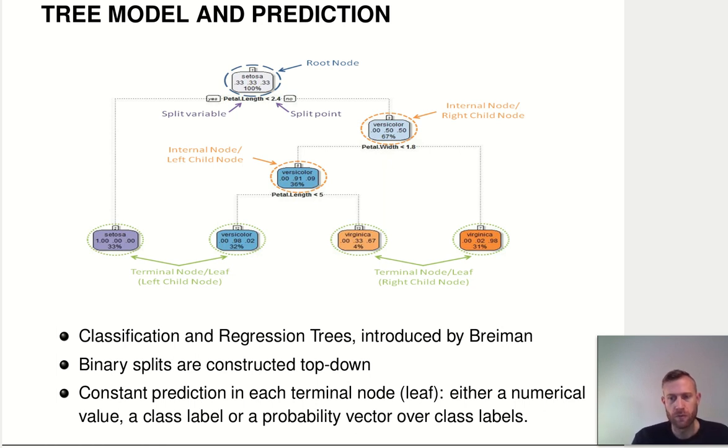For example, here we're using the feature petal length and we're looking at our data and looking whether an observation is above or below 2.4. So that's our split variable and our split point. And depending on what the answer is, when it's yes, we sort the observation into this part of the tree, and if it's not then we sort the data into that part of the tree. And then we do that again and again. And so this is how this tree structure arises.